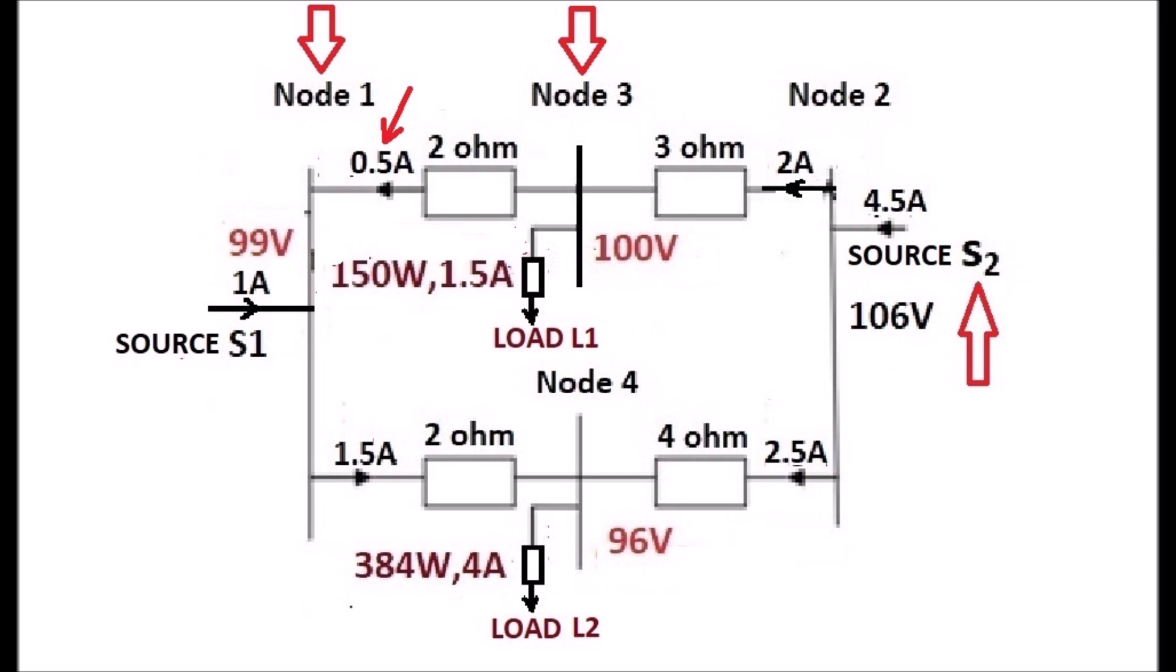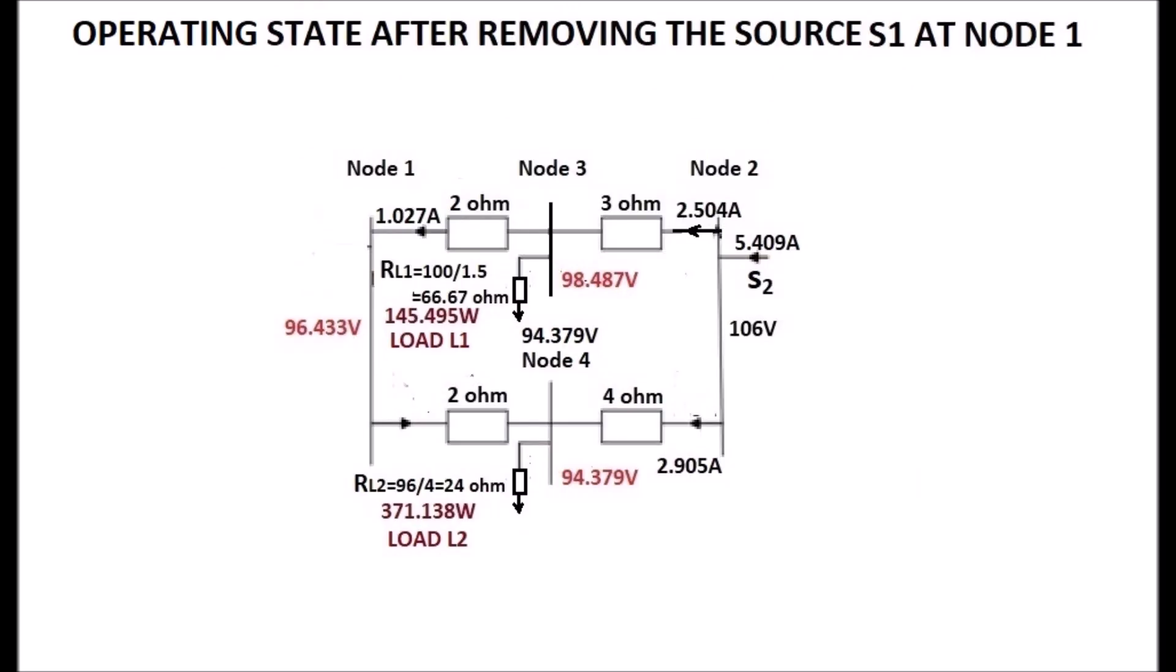Now, see the display. It shows the operating state in the absence of the source S1 at node 1. There is a current of 1.027 ampere from node 3 to node 1.